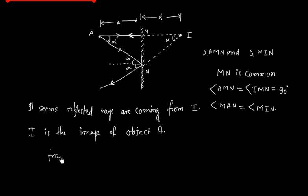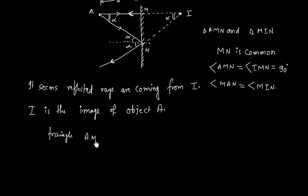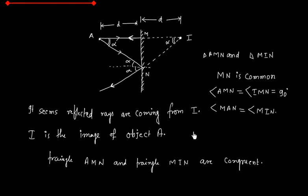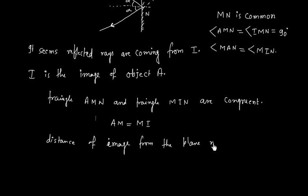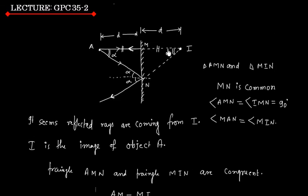So triangle AMN and triangle MIN are congruent. Applying the property of congruency, length AN equals IN. This means the distance of the image from the plane mirror is D — the same as the object distance.